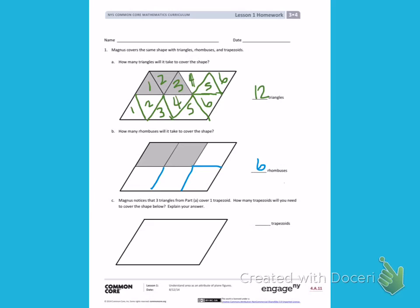Magnus notices that three triangles from part A cover one trapezoid. How many trapezoids will you need to cover the shape below? Explain your answer. So looking back at part number A, we can see that three triangles make one trapezoid. That means another three triangles will make a second trapezoid. Continue to look at part A to help you figure out how many trapezoids will cover the shape. Then use words to explain how you knew that many trapezoids would cover the shape without having to draw anything into your picture.